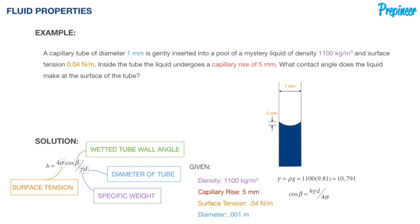We're going to rearrange our equation to isolate beta because we're looking for that particular contact angle that the liquid is making.